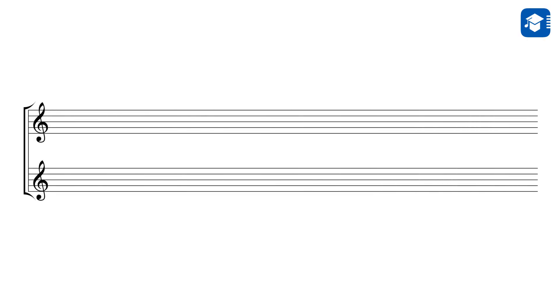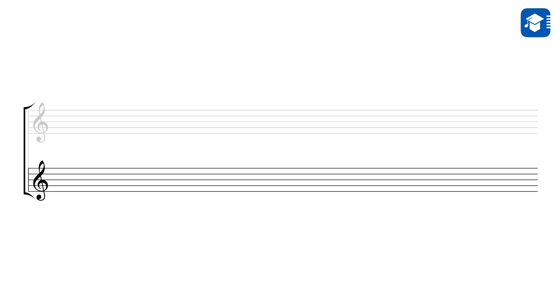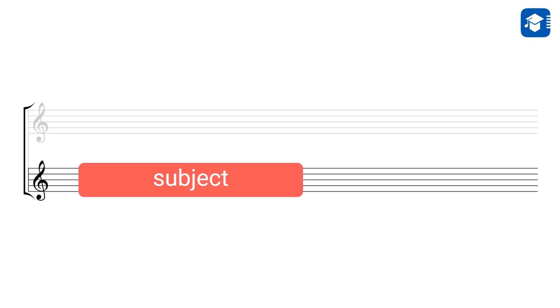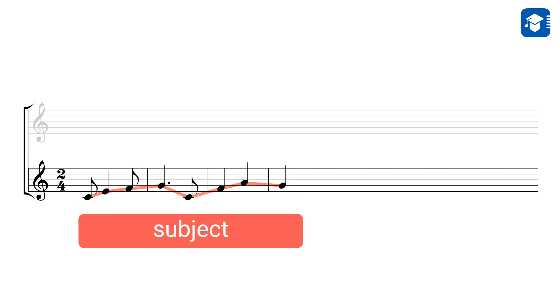A Fugue has multiple voices. In our first Fugue, two voices should be enough. We can choose which voice to start with — let's go with the lower one. The melody that starts the Fugue is called the subject. It is the main theme of a Fugue; a good theme should be easily recognizable. The subject is the nucleus of the whole Fugue, the core of the composition from which the music can grow.